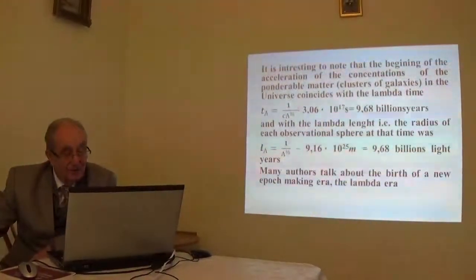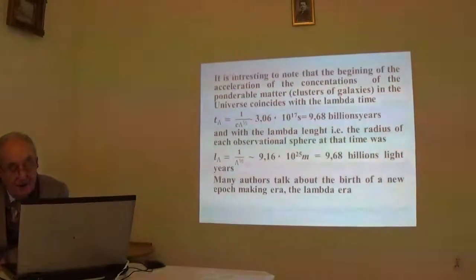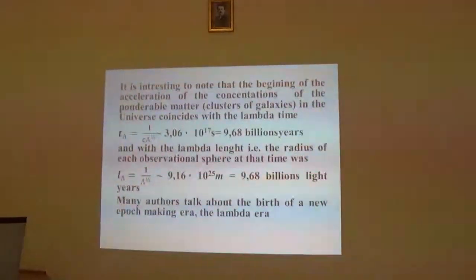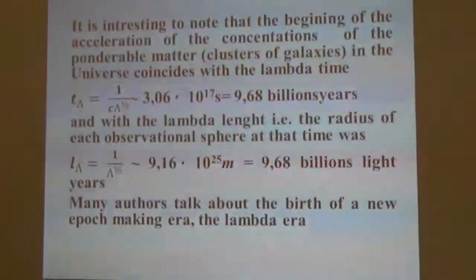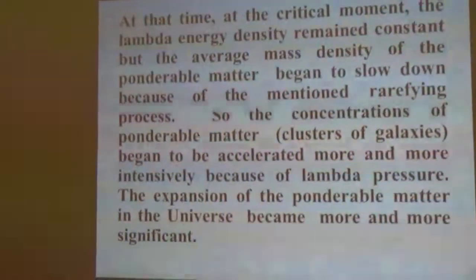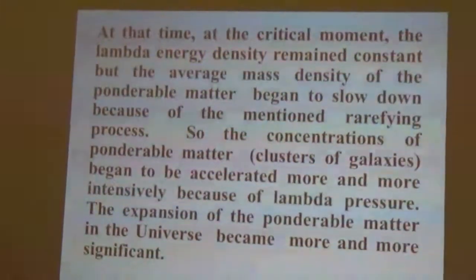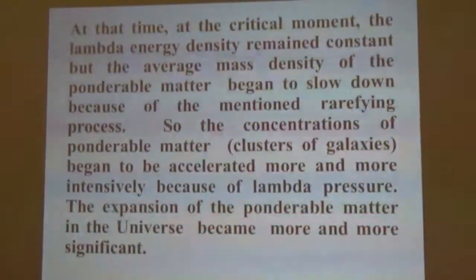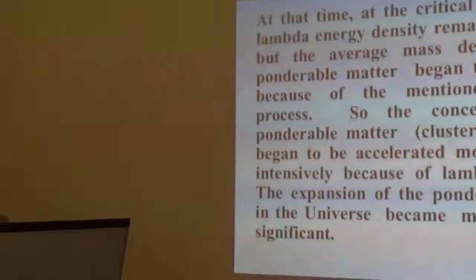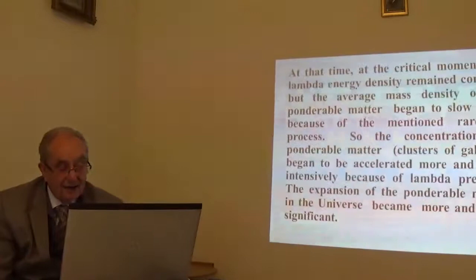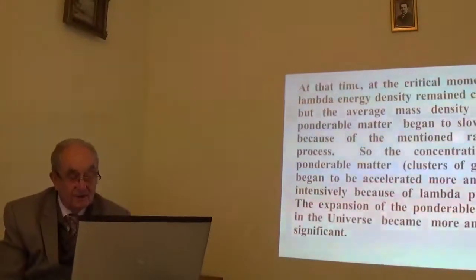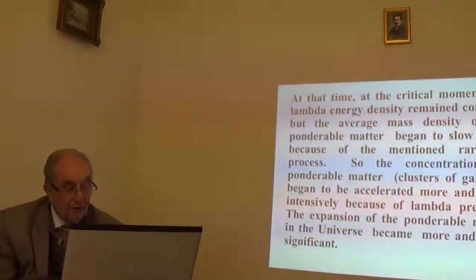It is interesting to note that the beginning of our acceleration — the beginning of the concentration of ponderable matter clusters of galaxies in the universe — coincides with the lambda time. The radius of each observational sphere at that time was just 9.68 billion light years. Many authors talk about the birth of a new epoch: the lambda year. At that critical moment, the lambda energy density remains constant, but the average mass density of ponderable matter began to slow down because of the rarifying process, so clusters of galaxies began to be accelerated more and more intensively because of the lambda pressure.